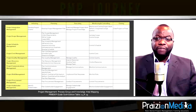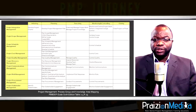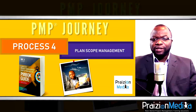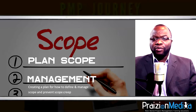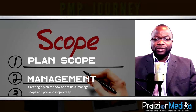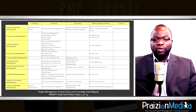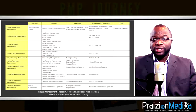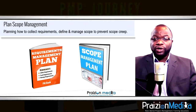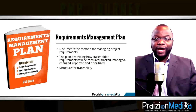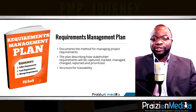Process 4: Plan scope management. In this process, a major goal is to define how we're going to manage scope and how we're going to define scope to start with. It's a plan that gives us guidance on how to carry out all the processes in the scope knowledge area. We also get a requirements management plan from this process that guides us on how to collect requirements.